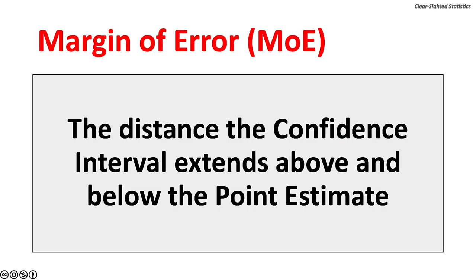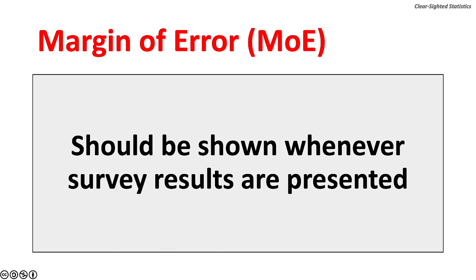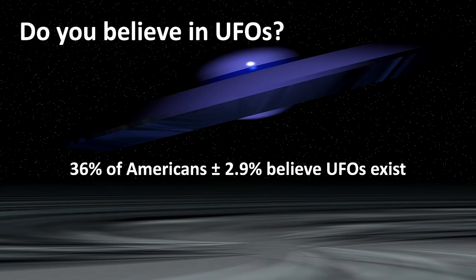The margin of error is the distance the confidence interval extends above and below the point estimate. It is usually presented after the point estimate as the figure after a plus or minus sign. The margin of error should be shown whenever survey results are presented. Here is a National Geographic survey that asked respondents if they believed in unidentified flying objects. 36% of Americans, plus or minus 2.9%, said they believed in UFOs.